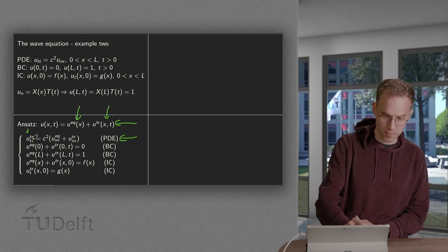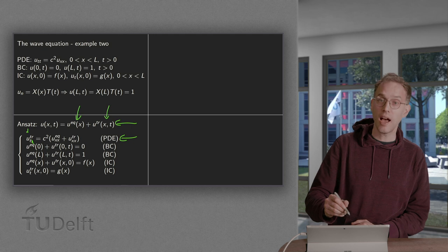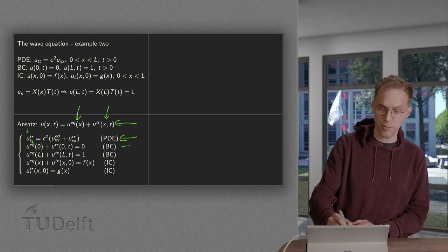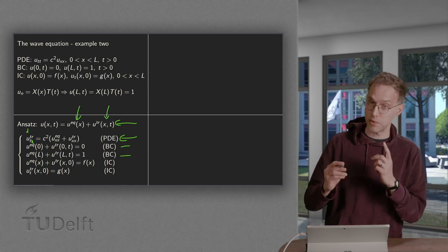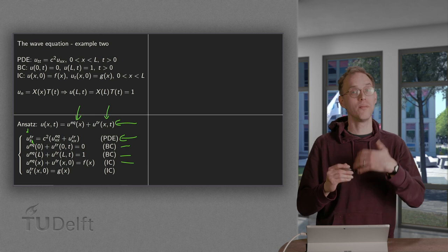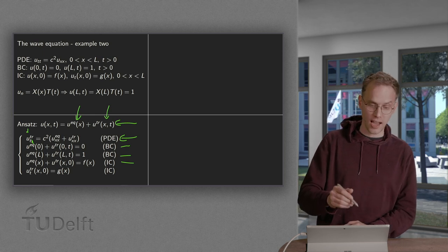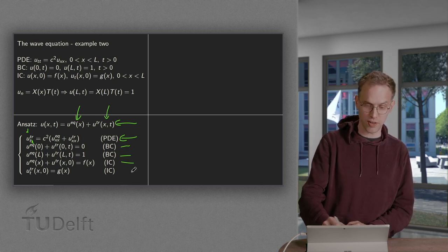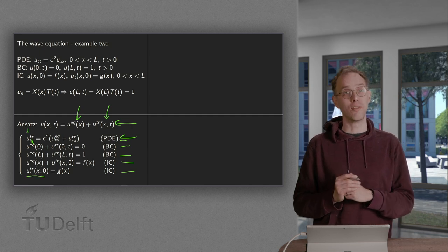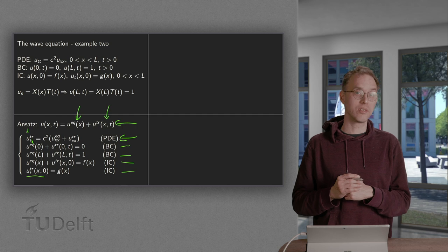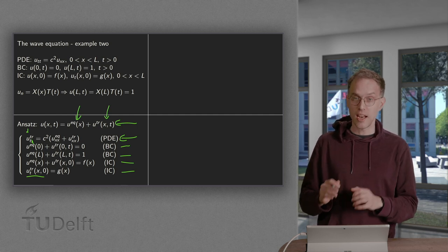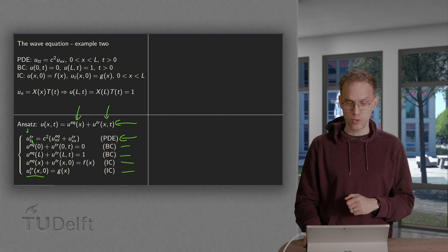In the boundary conditions: on the left we have 0, on the right the sum must equal 1. In the first initial condition, the sum equals f of x. In the second initial condition we only see the transients, because the equilibrium solution does not depend on time, so when we differentiate it with respect to time it vanishes. Now we split the problem into two parts.